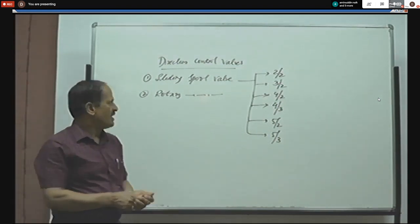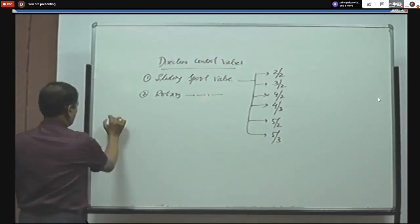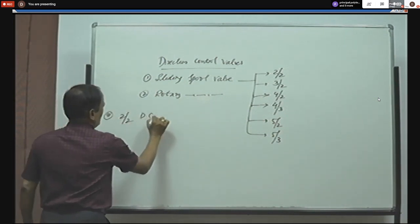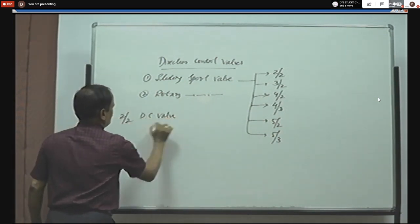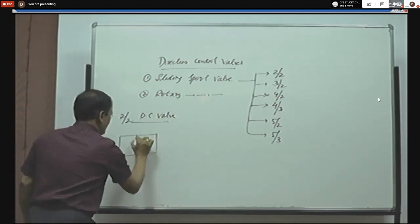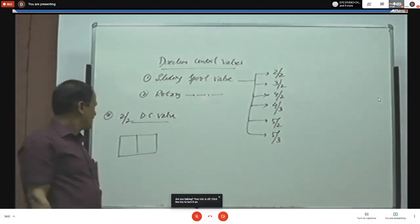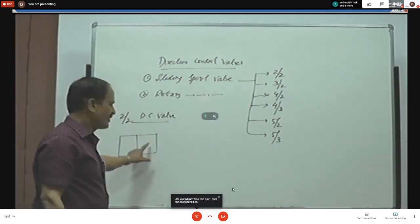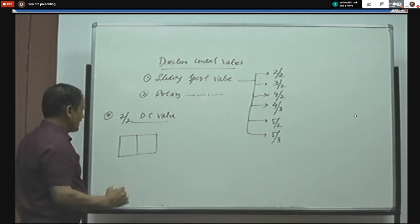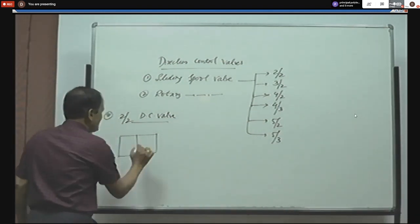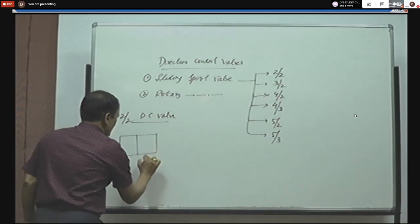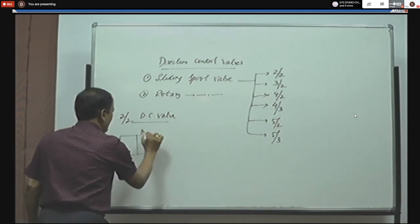In the case of 2x2 DC valve, two ports are made on the valve body and there are two positions to open and close the ports. In the case of 3x2, three ports and two positions. In 4x2, four ports and two positions. In 4x3, four ports and three positions. In 5x2, five ports and two positions. In 5x3, five ports and three positions.